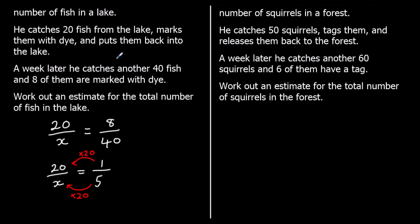So x, our total number of fish, must be 5 times 20. And that is 100 fish.